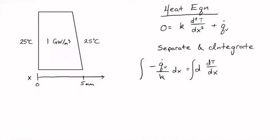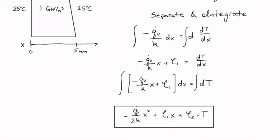We separate the equation and integrate once. That gives us our first constant of integration. We separate the equation and integrate a second time. We arrive at the solution to this differential equation.